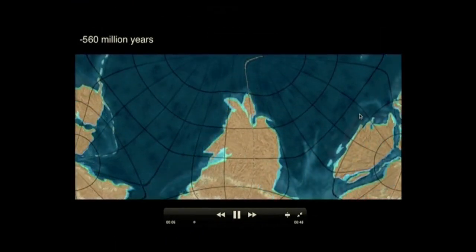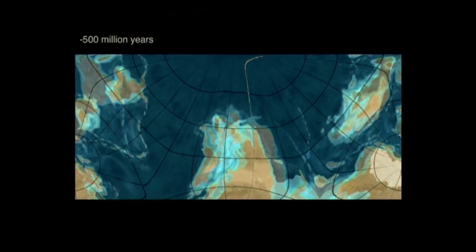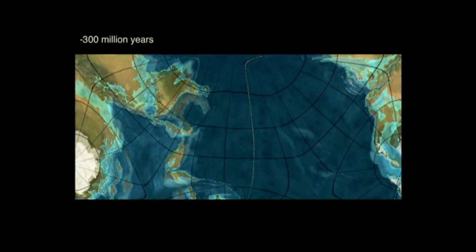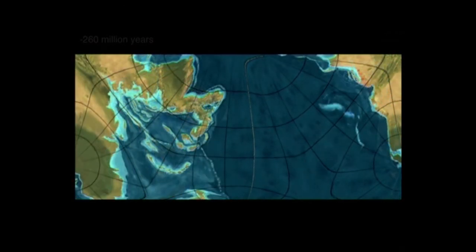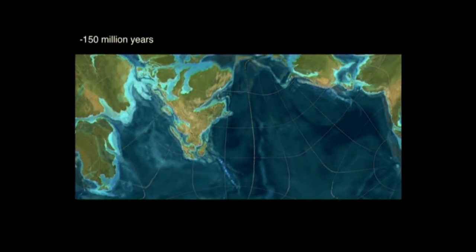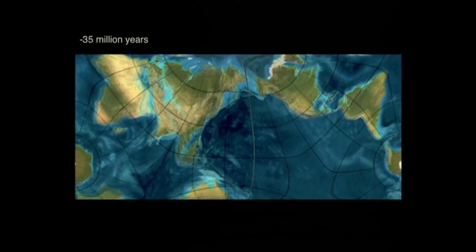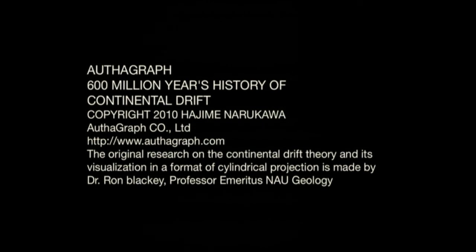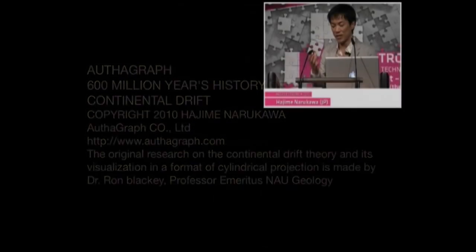This animation shows continental drift for the past 650 million years, based on data from paleogeographer Ron Brachy. For example, here is India — separated from Antarctica, separated from Madagascar, swimming across the Indian Ocean and crashing into the Eurasia continent. That's how the Himalayas were made. This kind of geographical information you can visually understand.